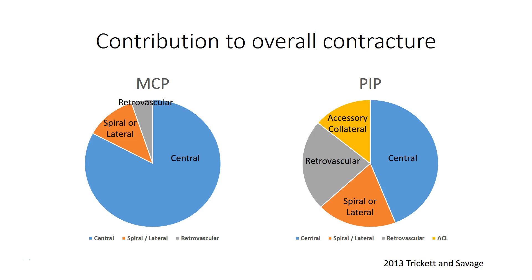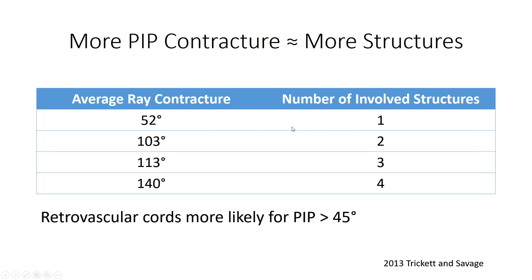Metacarpophalangeal joints are primarily affected by central cords, though other cords can occur. The situation is very different at the proximal interphalangeal joint, where there is no dominant cord type. Central cord is most common but is not a majority. Retrovascular cords are fairly common; spiral or lateral cords less so. Contractures of the accessory collateral ligament are also significant contracting forces in PIP joints. Unlike the MCP joint, PIP joints commonly have more than one structure contributing to contracture, and the greater the degree of contracture the more likely multiple structures are involved. Retrovascular cords are more common for PIP joints with greater than 45 degrees of contracture.